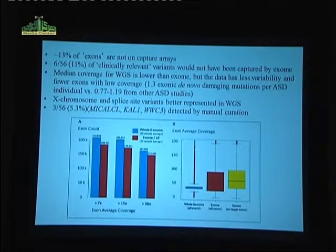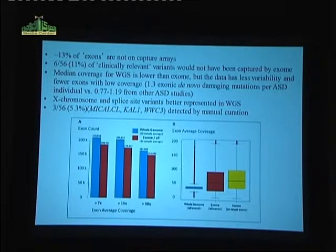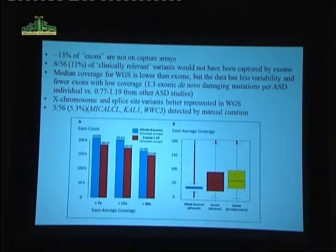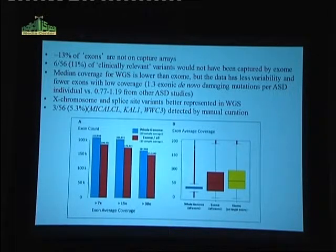That's compared to the 20% we would have using older techniques. About 13% of the exons are not captured on standard capture arrays. Six of the 56 clinically relevant variants we identified would not have been captured in a comparison study. The median coverage by whole genome sequencing is lower than the exome, but we have much better coverage across the exome, allowing us to capture splice-site mutations more robustly.